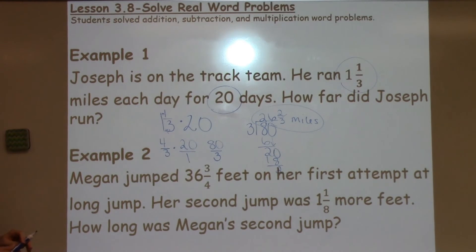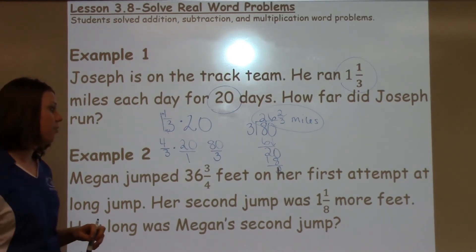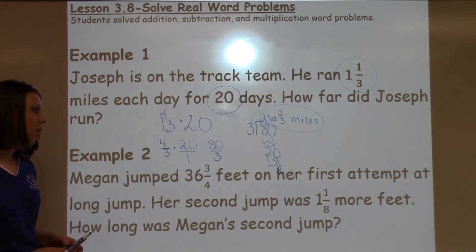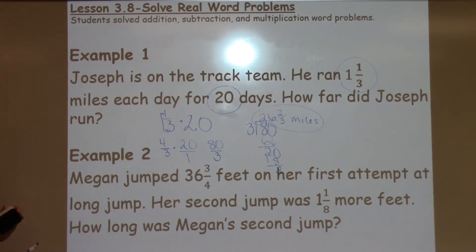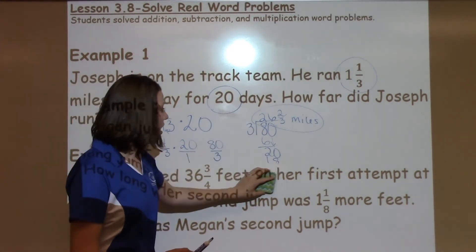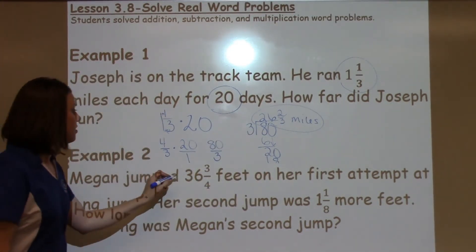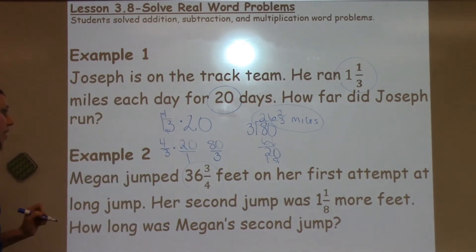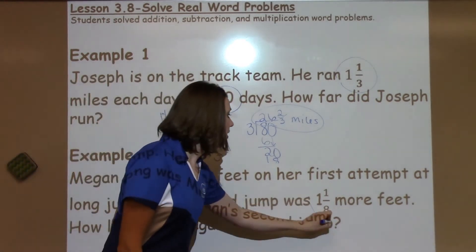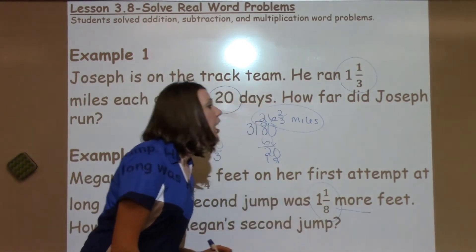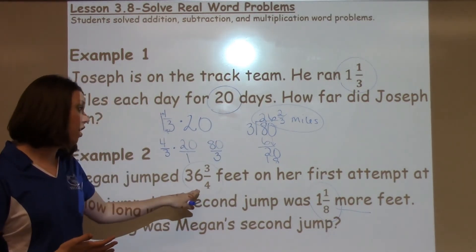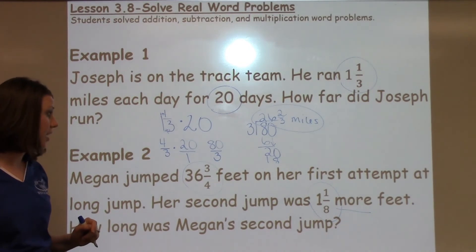Our next question says: Megan jumped 36 and 3 fourths feet on her first attempt at long jump. Her second jump was 1 and 1 eighth feet more. How long was Megan's second jump? As I'm looking at this problem, I'm going to go ahead and circle the keywords — I have 36 and 3 fourths, and then I've got 1 and 1 eighth more feet. I know I'm going to have more of something, so that tells me I'm going to add in this case.